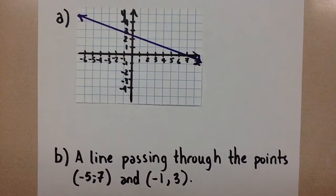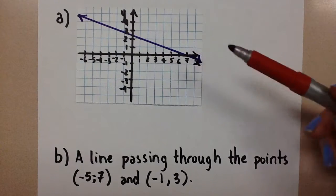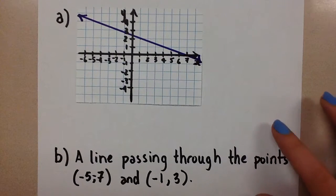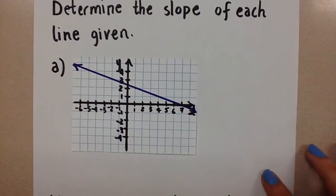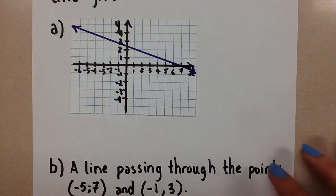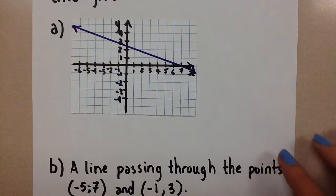So I have two examples. The first one we're given a graph and in the second one we're just given two points. There are multiple formulas we can use to calculate the slope of a line, and it just depends on the information that we're given which choice we make.